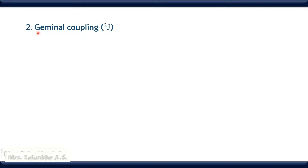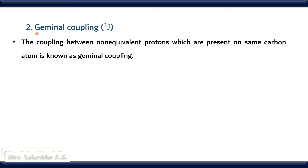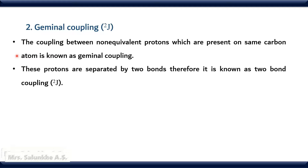The next type is geminal coupling. The coupling between non-equivalent protons which are present on the same carbon atom is known as geminal coupling. These protons are separated by two bonds. Therefore, it is ²J coupling.